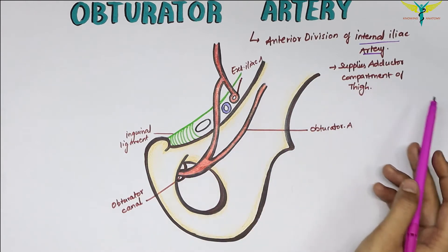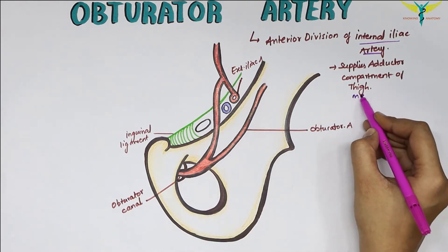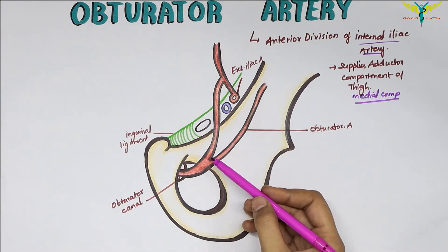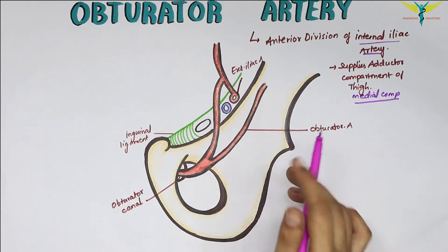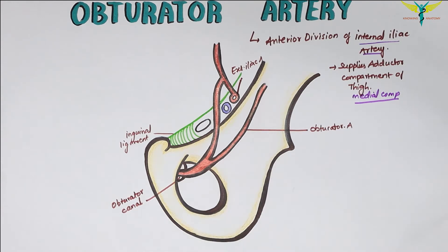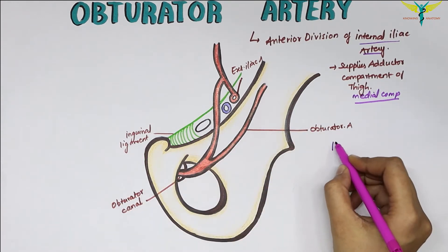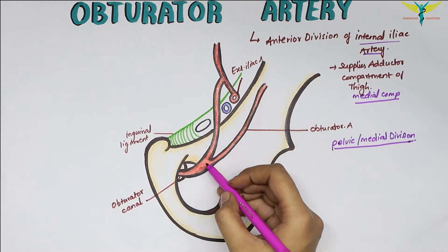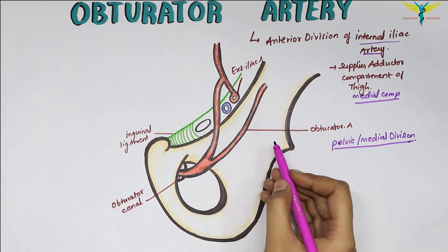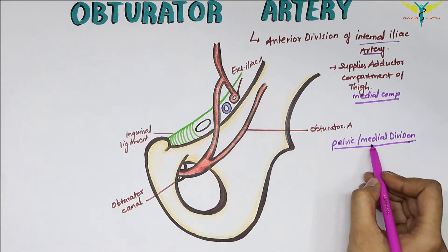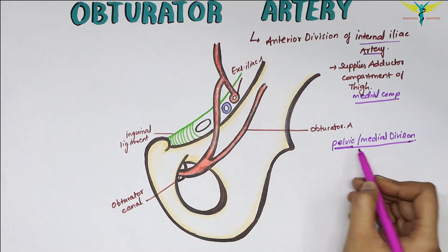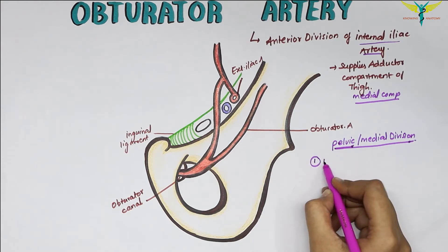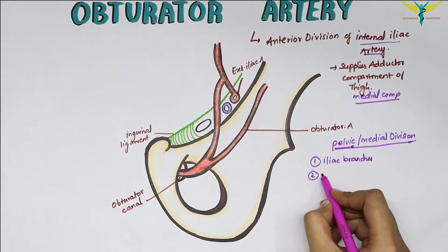The obturator artery gives many branches, divided into pelvic branches and extra-pelvic branches. The pelvic branches are also called medial branches. The obturator artery divides into a medial and a lateral division, and the medial division is also called the pelvic division, which gives many branches.